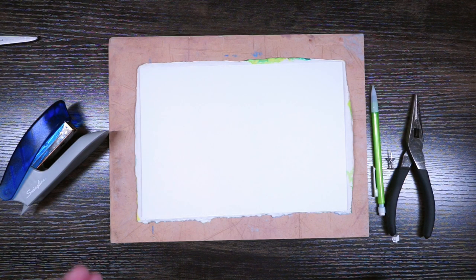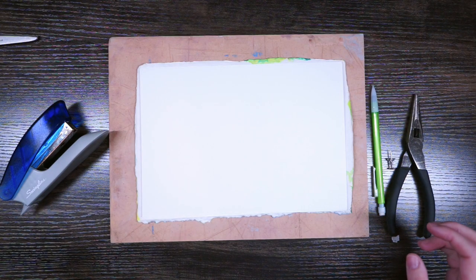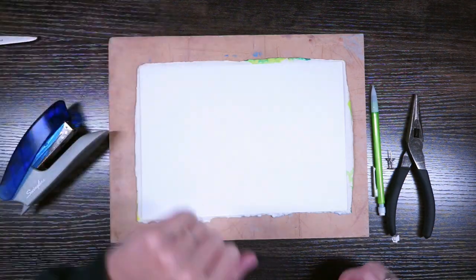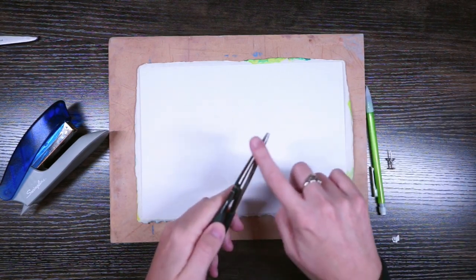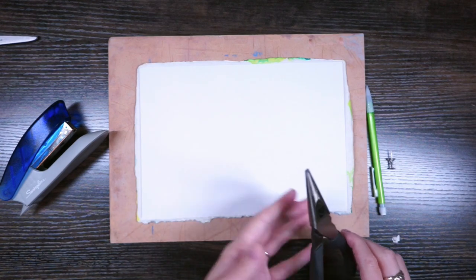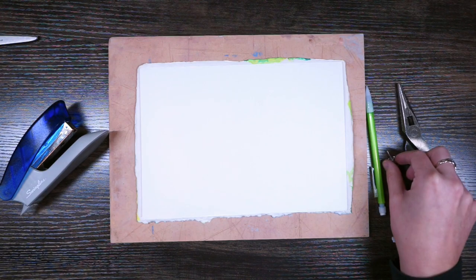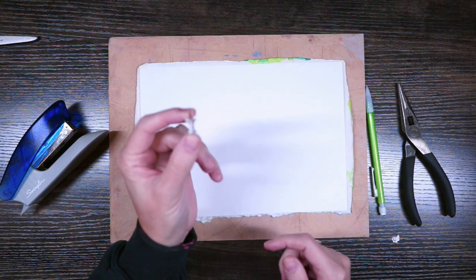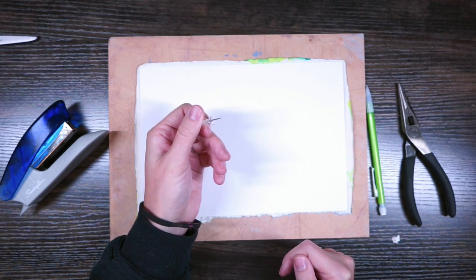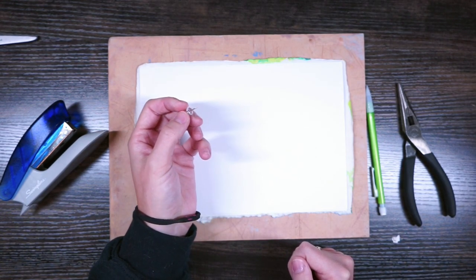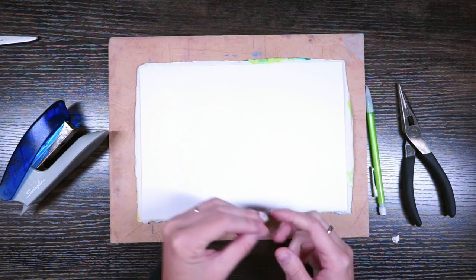In place of a bone folder, I can use anything flat to help my creases be nice and firm. I'm just going to use the edge of these pliers because this can be used for multiple things. Instead of an awl, I could just use this thumbtack to poke some holes. I could use a nail and a hammer, really anything sharp you can poke holes through paper with.